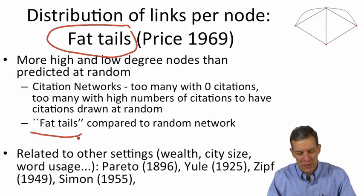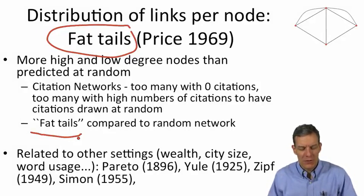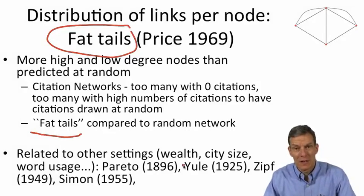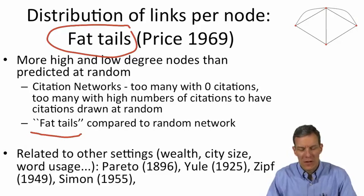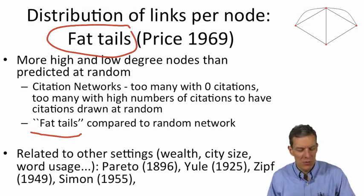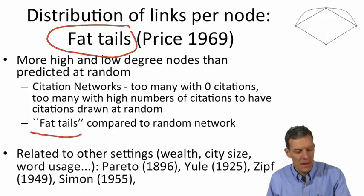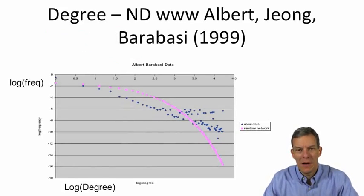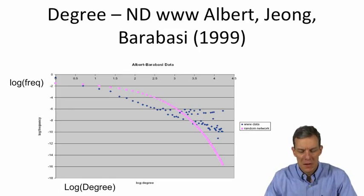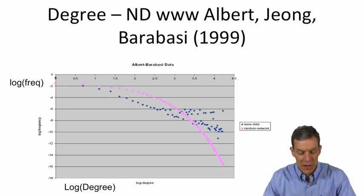This is related to a lot of other things. There's a lot of things that have fat tails. These distributions go back to Pareto in the 1890s. Things like wealth distributions, distributions of city populations around the world, word usage, there's a whole series of different things that have these kinds of fat tails. In particular, there's a well-known paper by Albert, Jeong, and Barabasi in the late 1990s, where they looked at web pages and connections to web pages in the Notre Dame part of the worldwide web at that point in time.